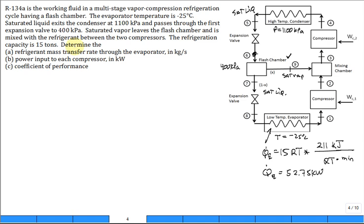It didn't explicitly say saturated vapor coming out, but that's a typical assumption - saturated vapor exits the evaporator going through the compressor. We'll assume the isentropic efficiency is 100% for both compressors. For part A, calculate the refrigerant mass transfer rate through the evaporator, M dot E.